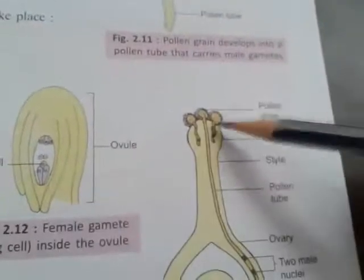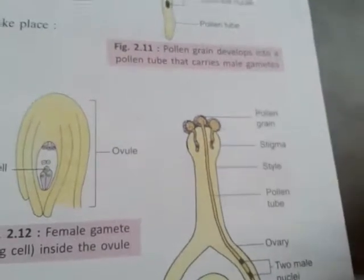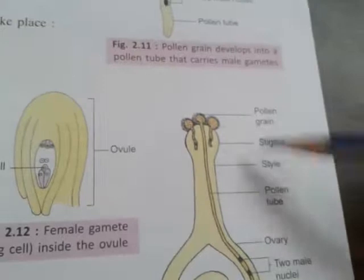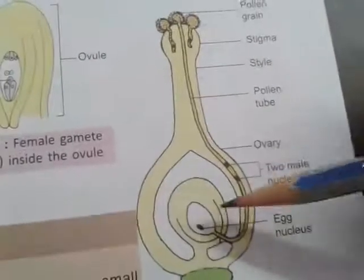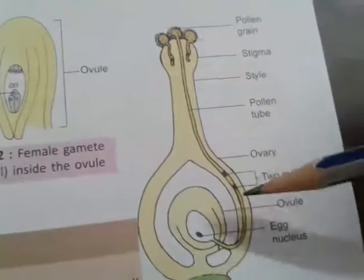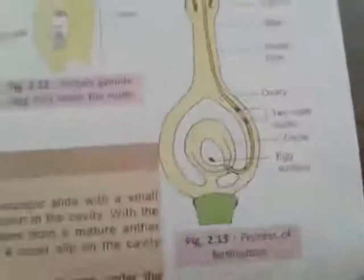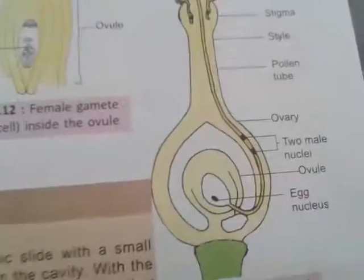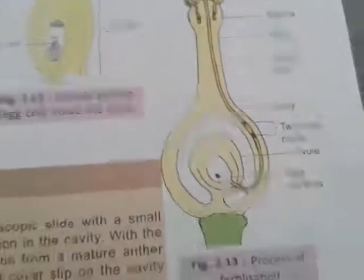The male part contains the anther, and this anther delivers pollen to the stigma. The style then carries the whole pollen grains towards the ovary. The ovary contains the female gamete, and when fusion takes place between the male gamete and the female gamete, one zygote is formed. Once the pollen tube enters the ovule where the female gamete is located, the male gamete fuses with the female gamete and this completes the process of fertilization.